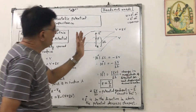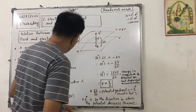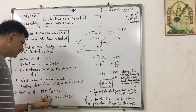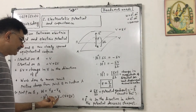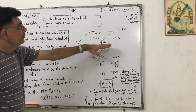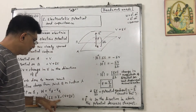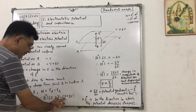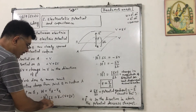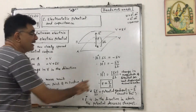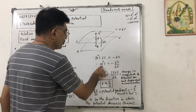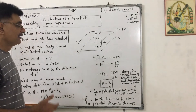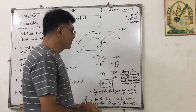Since E and delta L are in the same direction, we can write: mod of E into delta L equals V_A minus V_B, that is V minus (V plus delta V). This V cancels, so mod of E into delta L equals minus delta V. Therefore, mod of E equals minus delta V by delta L.